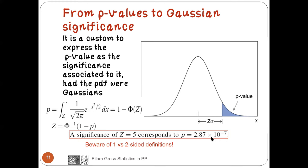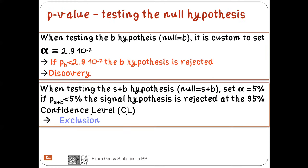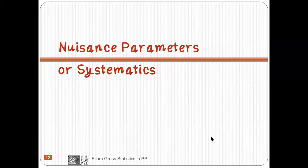When testing the background hypothesis, the custom is to set the p-value threshold at 2.9×10⁻⁷ as the criterion for rejecting the background-only hypothesis and claiming a discovery. When testing the signal-plus-background hypothesis, the criterion is much looser — 5%. If the p-value of S+B is less than 5%, we reject the signal hypothesis at what we call the 95% confidence level, which leads to exclusion of the signal.